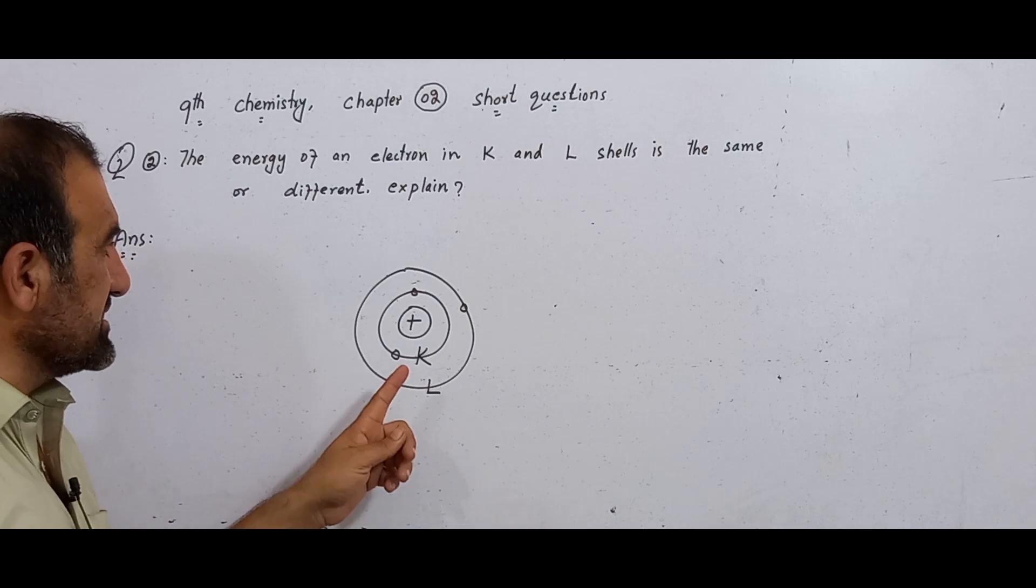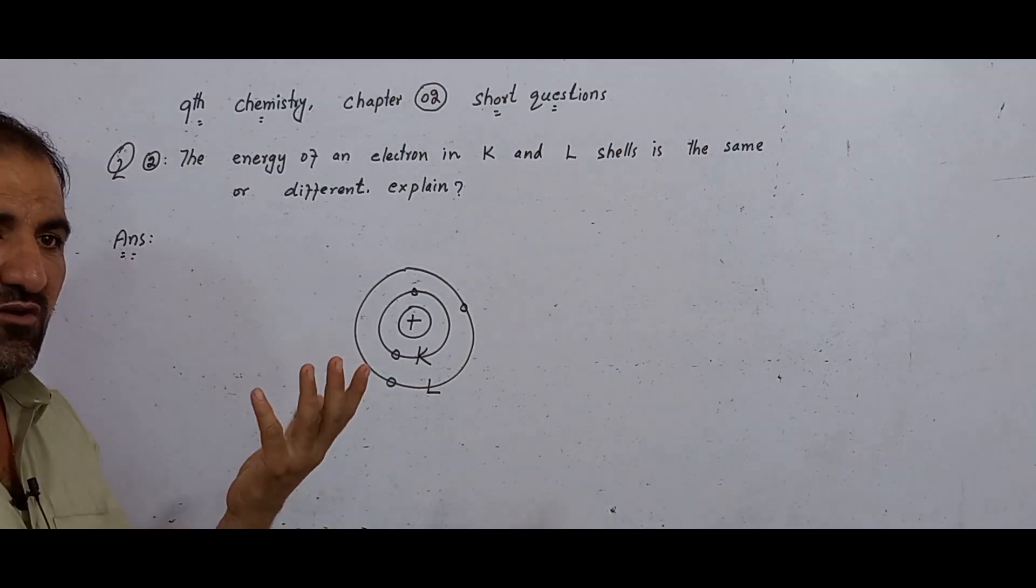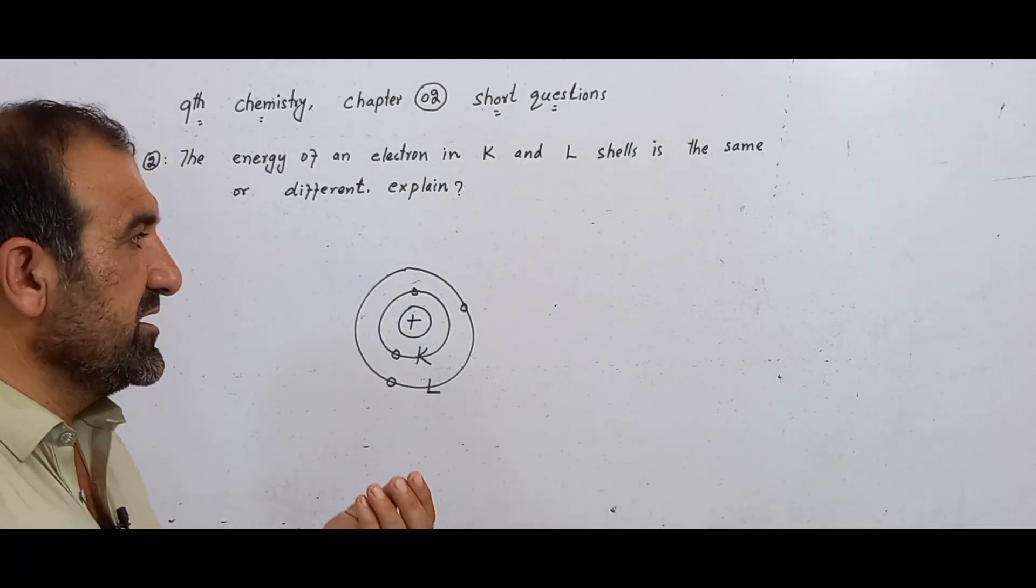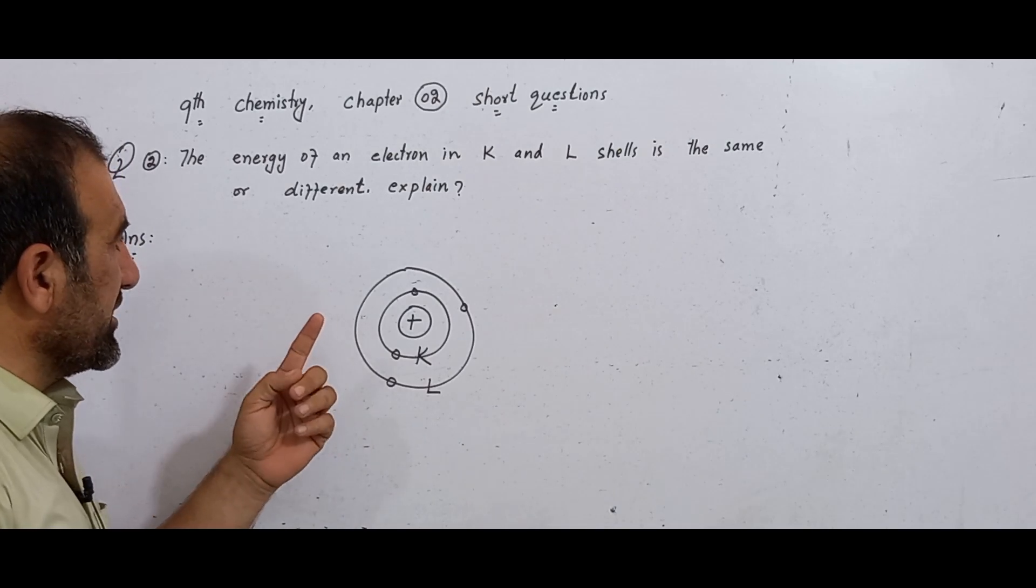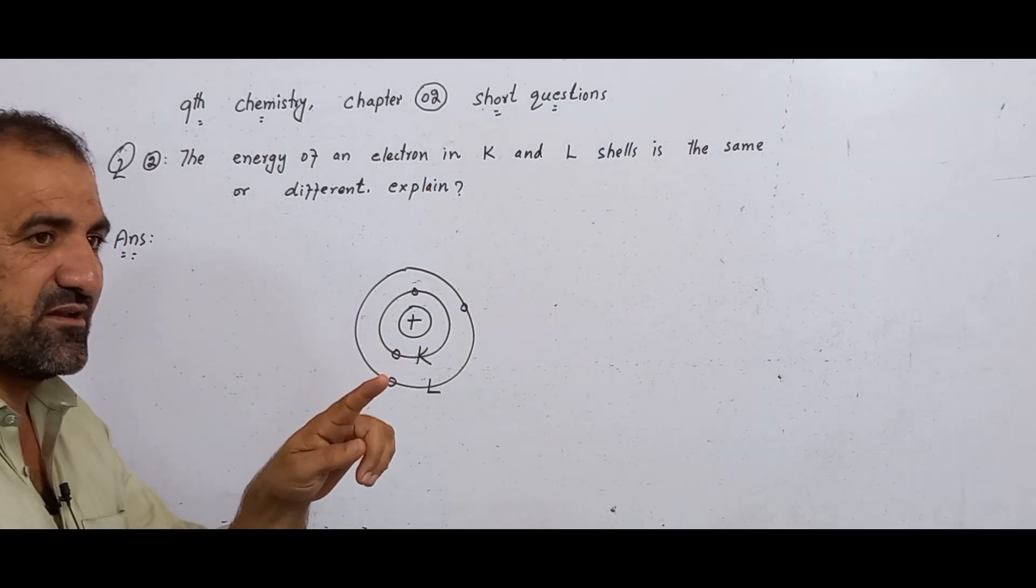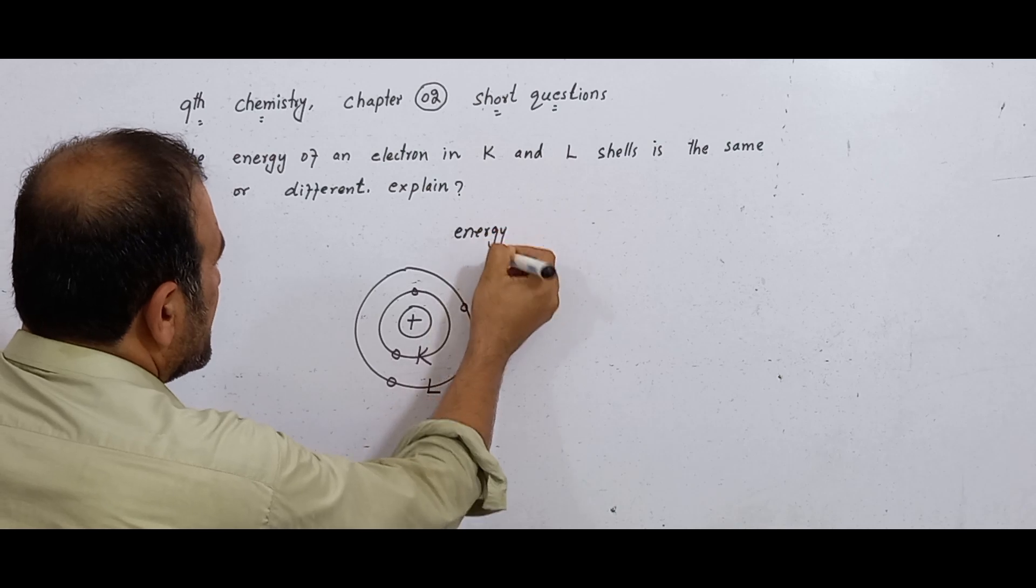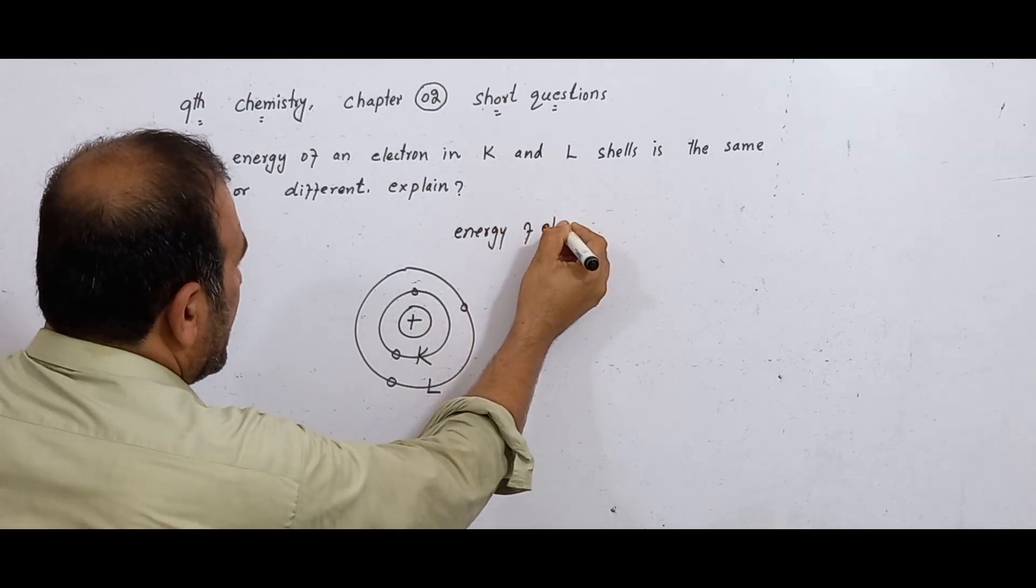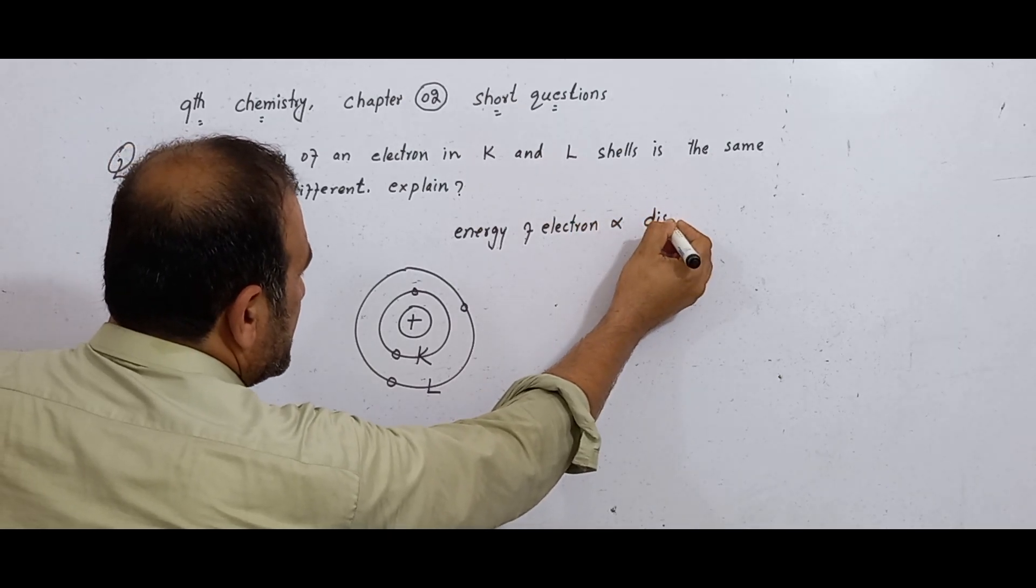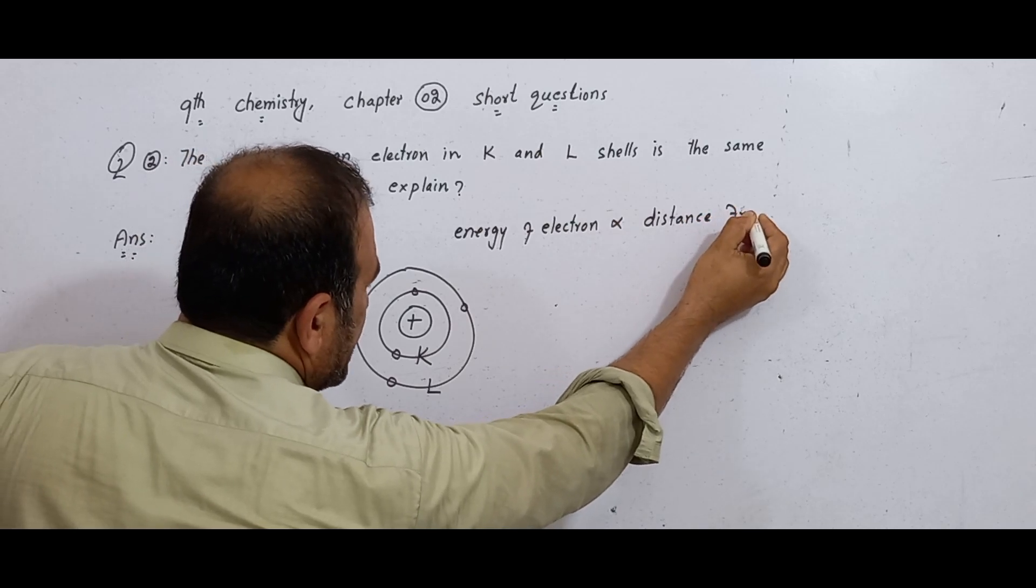The reason is because the shells are different. In the atomic model, the energy of electron in an orbit or shell is directly proportional to the distance from the nucleus.